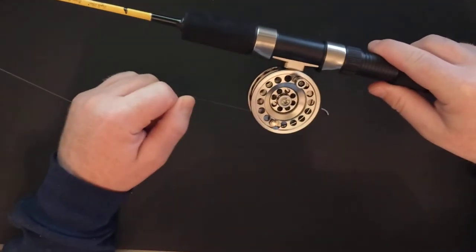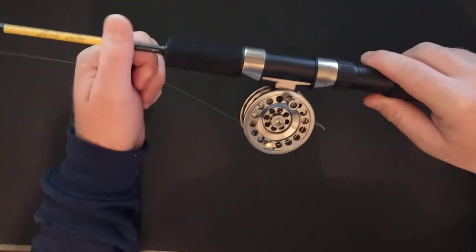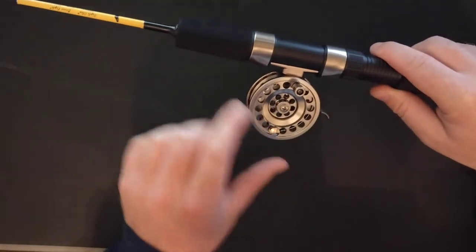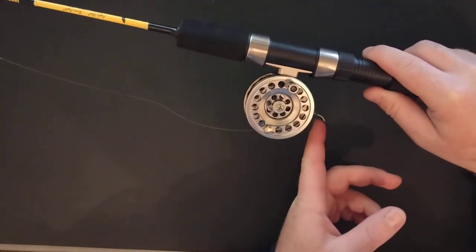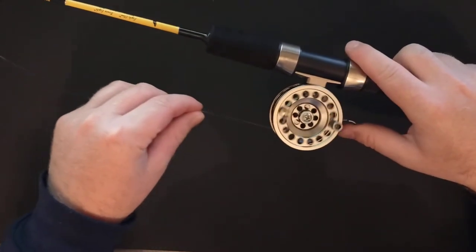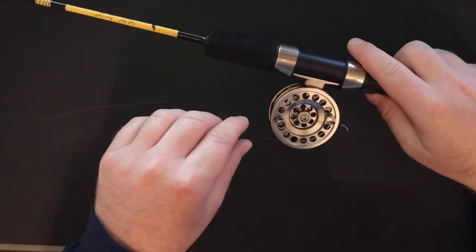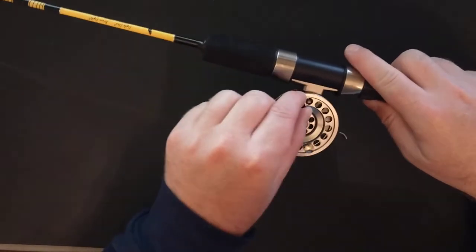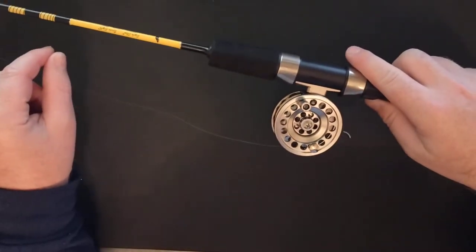Basically, it's locked up in one direction unless you pull this lever. If you pull this lever, then it will free spool in both directions. But if you let that go, as you reel in, it won't let any more line out.